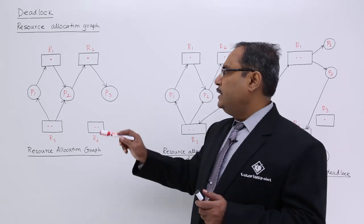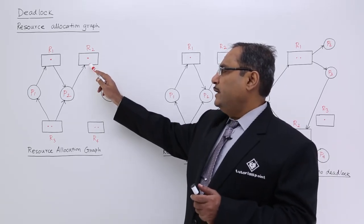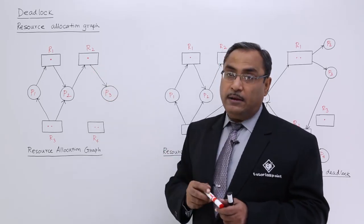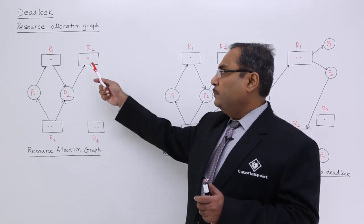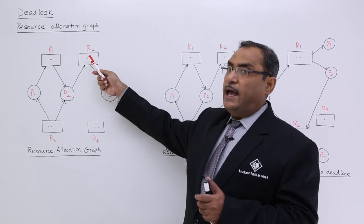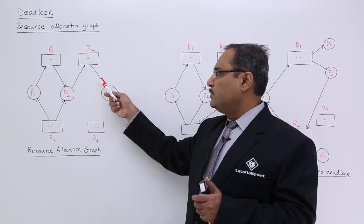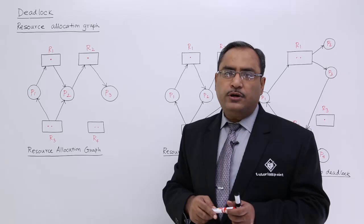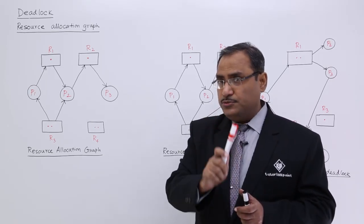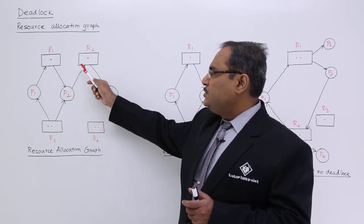The third component is the allocation edge. When an edge is directed from a resource to a process, it means one instance of that particular resource has already been allocated to that process. This is known as an allocation edge — it is directed from resource to process.